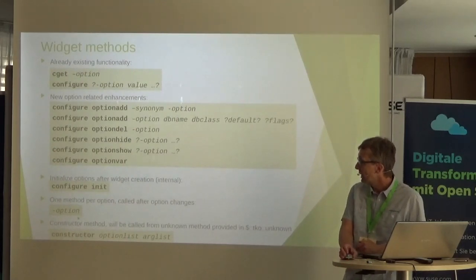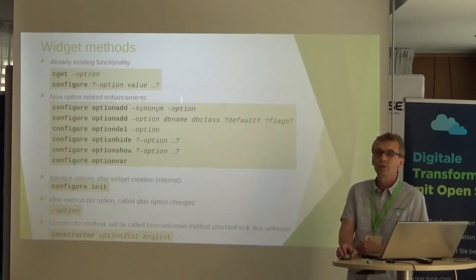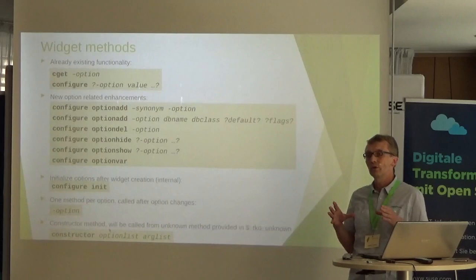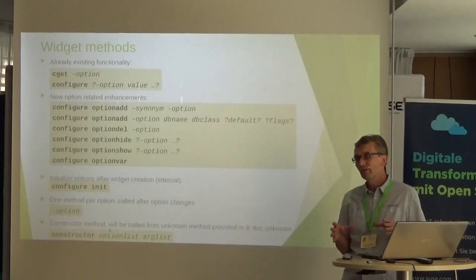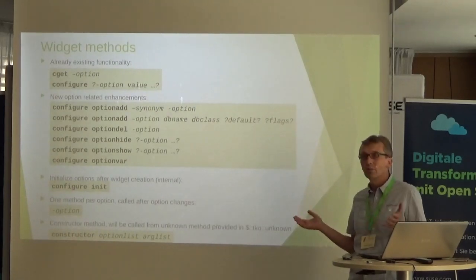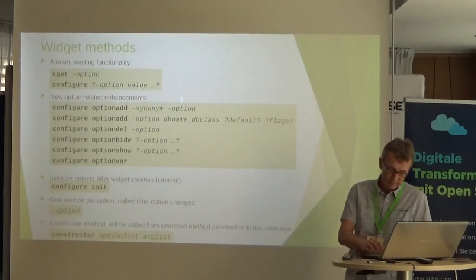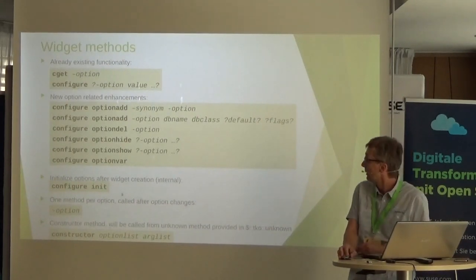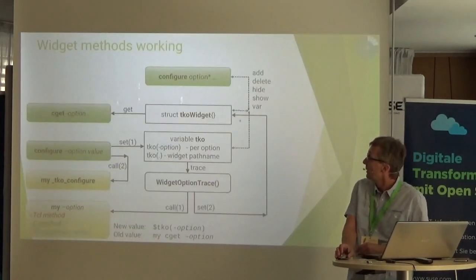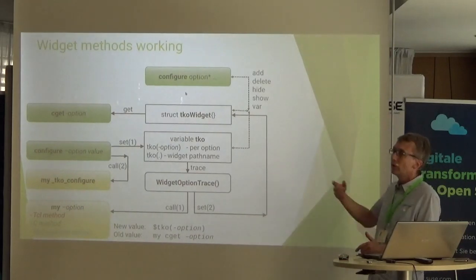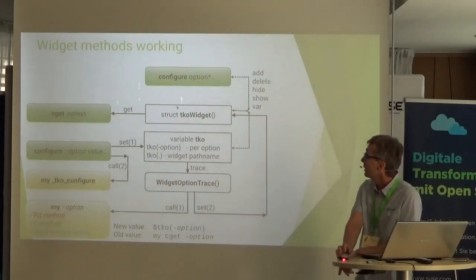The constructor uses two arguments: the first is the option list, where you can add your own options, and the second is the normal argument list.